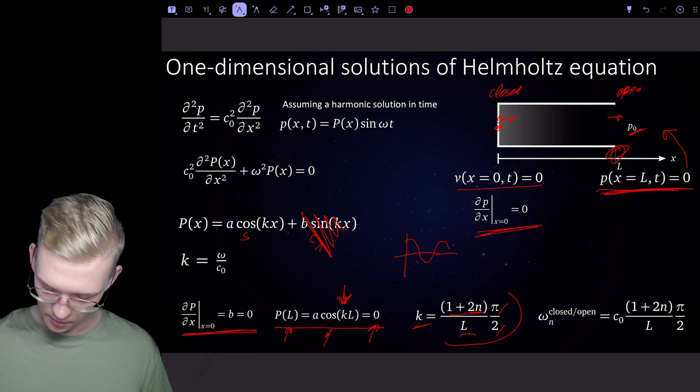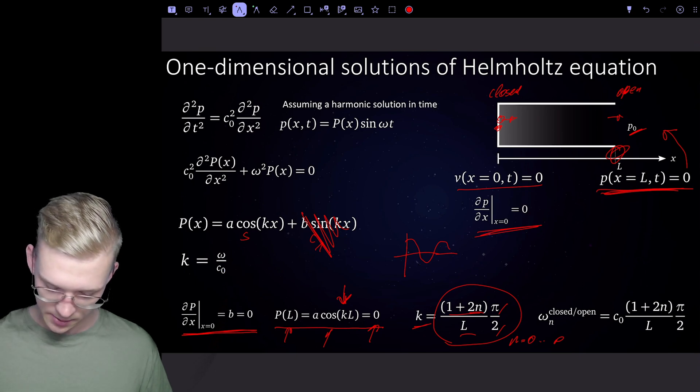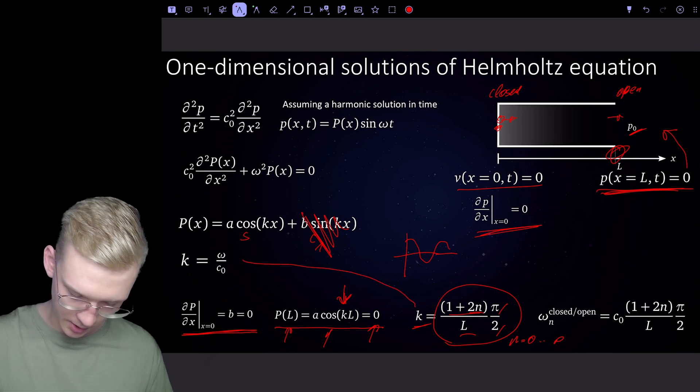So we already know that if k is that solution, k can have n going from zero to infinity because we're in a continuous system.